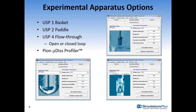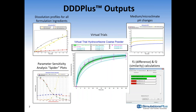Once you've run a simulation, you can output or analyze results in several ways: plot percent release versus time for different excipients and the active ingredient; look at pH changes in the microclimate and bulk fluid; do virtual trials to look at dissolution variability based on process or content uniformity; do PSA analysis to see what happens if you change particle size or pH of the media; and perform F1 and F2 calculations.